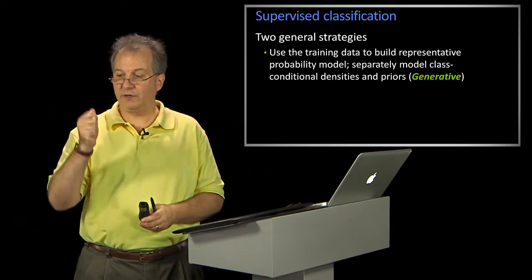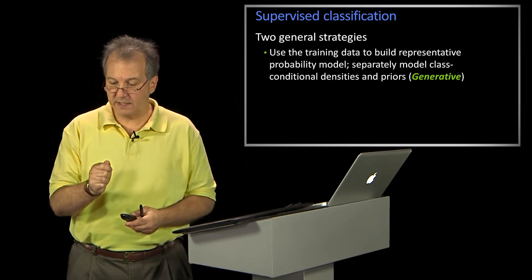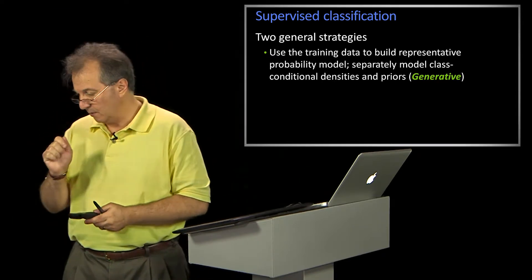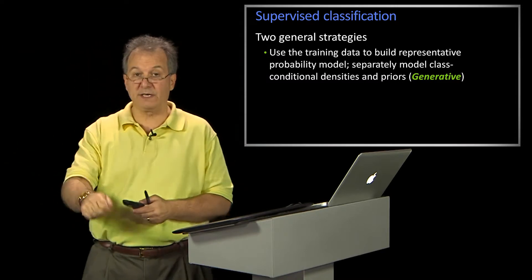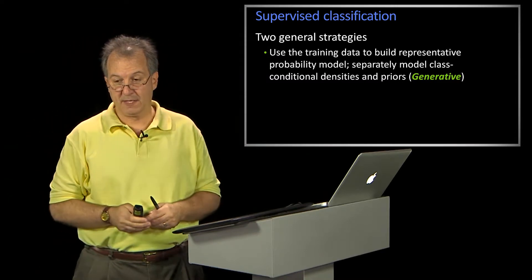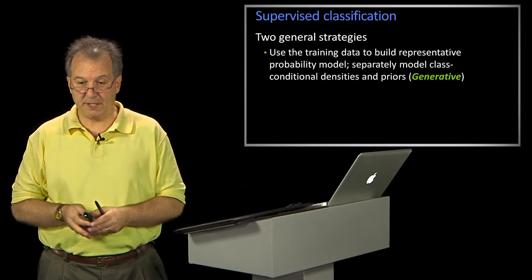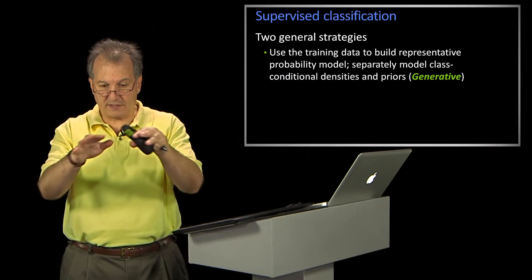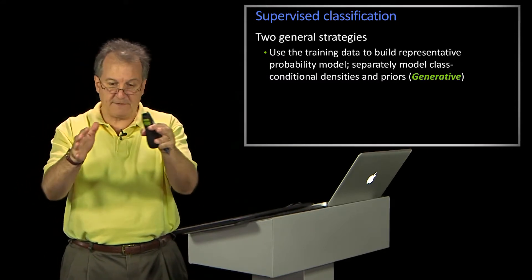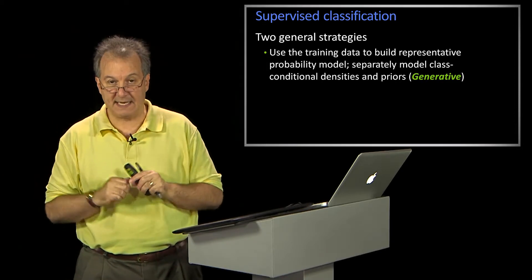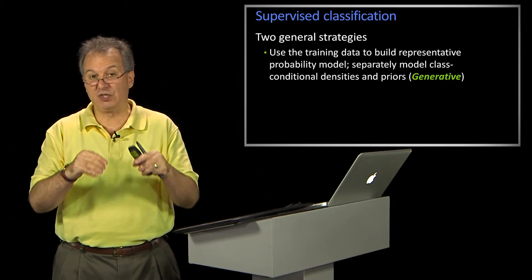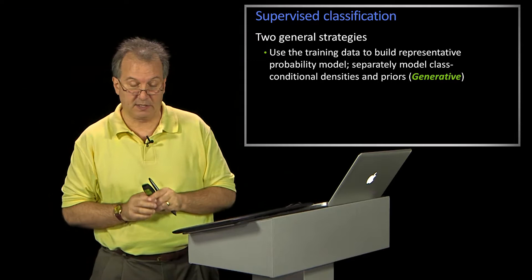Then when you give a new example, you say, does model A explain it better, or model B or model C? Whichever one explains it better, that's the one I pick. It's referred to as generative because the idea is that I have a model that describes all the different possible things that would be of class A. Or you could even think of it as generating a set of examples that are class A.